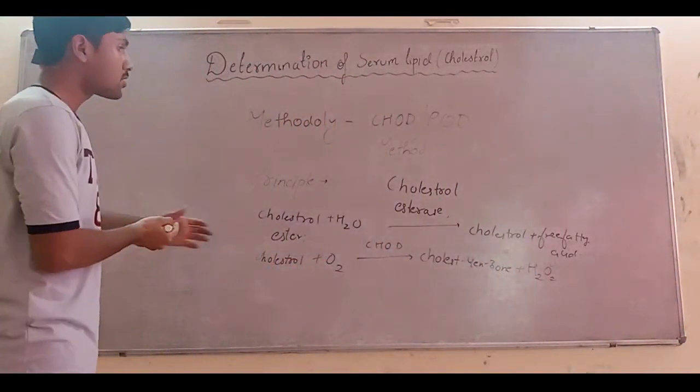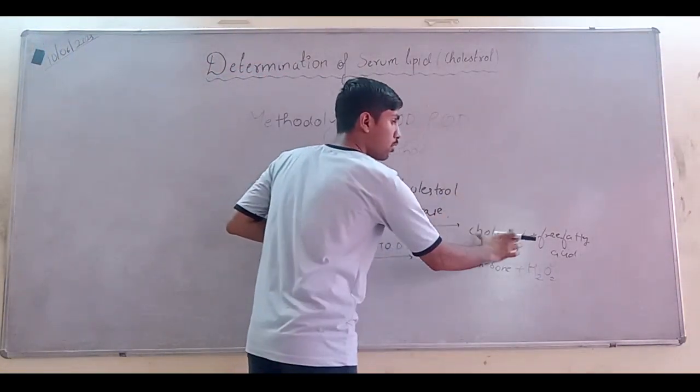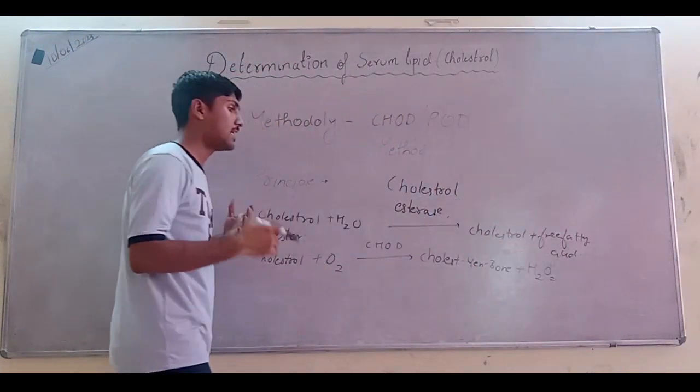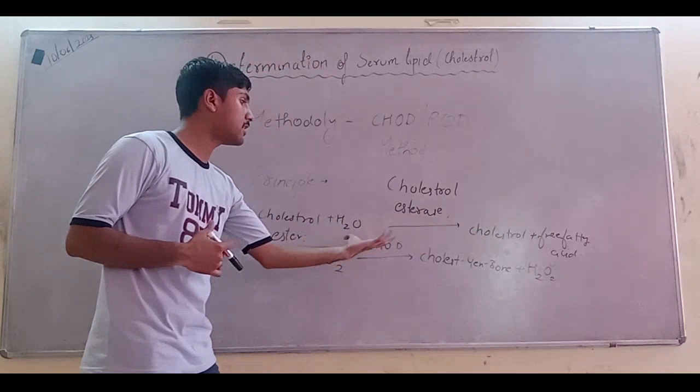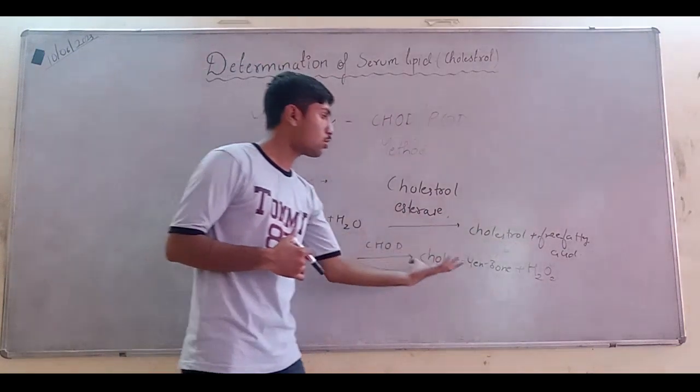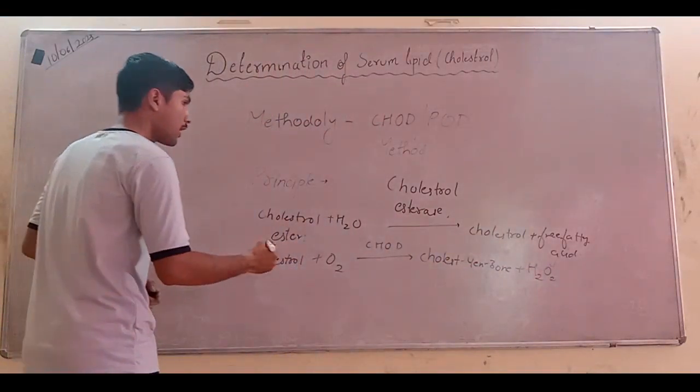In the first step, cholesterol ester is hydrolyzed by the cholesterol esterase into cholesterol and free fatty acids. And in another step, cholesterol formed in the first step is oxidized by the cholesterol oxidase enzyme into Cholest-4-en-3-one and hydrogen peroxide.